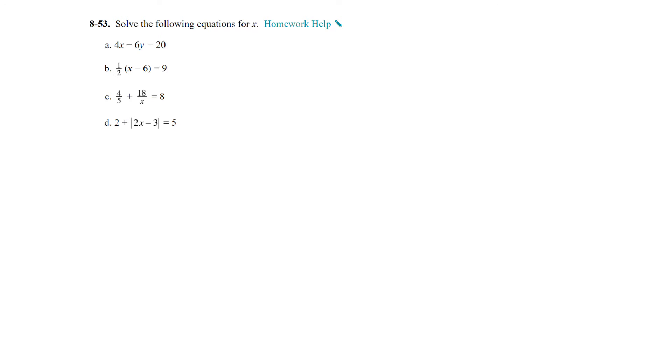Question 53, solve the following equations. So we have 4x minus 6y equals 20, so there's two variables here, so we're not going to get an actual value, we're just going to get an expression. So if we add 6y to both sides, we get 6y plus 20, and then we divide by 4, and so we have x is equal to 1.5, or 3 halves y, plus 5.